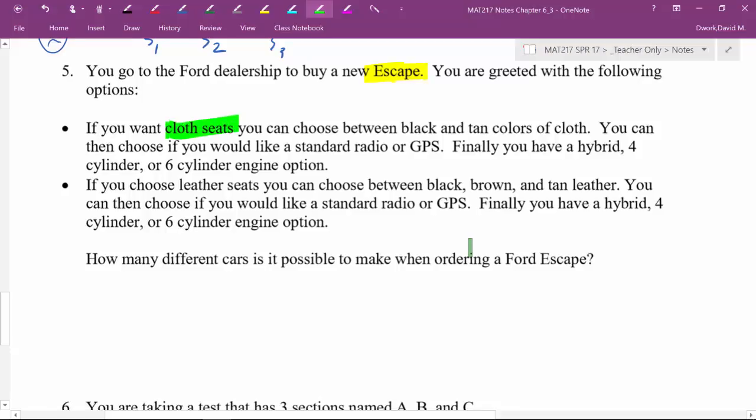If you choose cloth seats, then you can choose between the colors of black, tan, black and tan. Then you can choose if you would like a standard radio or one with GPS in it. And then finally, you have a hybrid engine, a four-cylinder engine, or a six-cylinder engine. Now, but that's only if you want cloth seats.